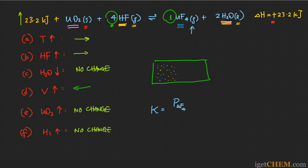The partial pressure of UF₄ is raised to the power of 1 — its stoichiometric coefficient. Products go on top and reactants on the bottom. HF is a gas, so I use the partial pressure of HF raised to the power of 4. H₂O being a pure liquid has no concentration, and UO₂ being a solid has no concentration, so neither shows up in the equilibrium expression. The only two things in the expression for K are UF₄ and HF.